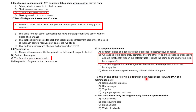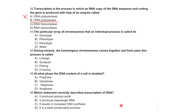Which of the following is found in both messenger RNA and DNA of a mammalian cell? Double helical structure is only in DNA, ribose sugar is only in RNA, and thymine is only in DNA — so the correct option D is sugar phosphate backbone. The cells in our body are all genetically identical, apart from the reproductive cells.